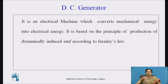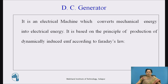DC generator is the machine which converts mechanical energy into electrical energy. It is based on the principle of production of dynamically induced EMF according to Faraday's law. When we rotate the conductors in magnetic field, EMF is induced in those conductors. For this, a magnetic field is required and rotating conductors are required.